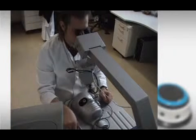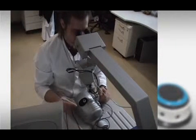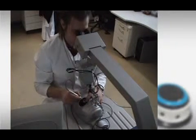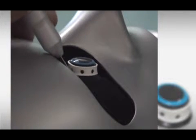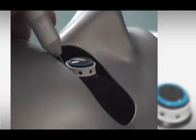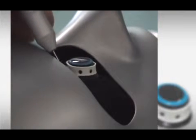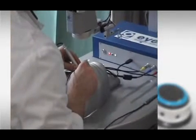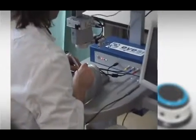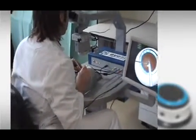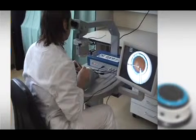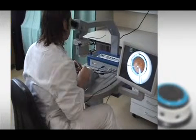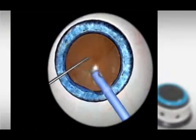The surgeon operates via a stereo microscope as in a real situation. After inserting the instrument into the artificial eye, movements are detected by optical tracking and transmitted to a computer that creates a virtual image, which is then presented via the stereo microscope in a three-dimensional mode, including visualization of the red fundus reflex.